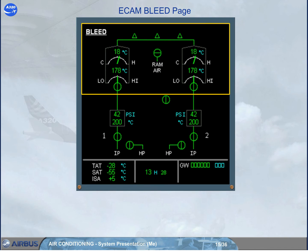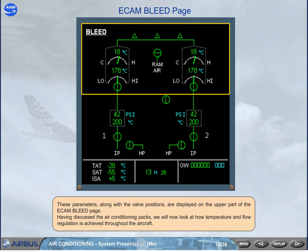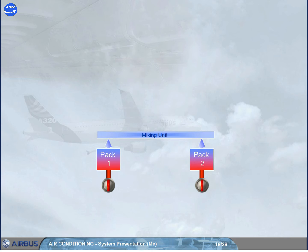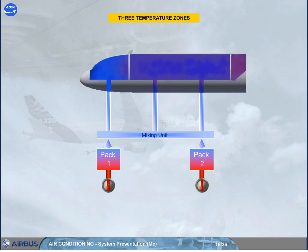Having discussed the air conditioning packs, we will now look at how temperature and flow regulation is achieved throughout the aircraft. The three outputs from the mixing unit feed three separate aircraft zones: cockpit, forward cabin, and aft cabin. Let's look at how the temperature of the zones is controlled.